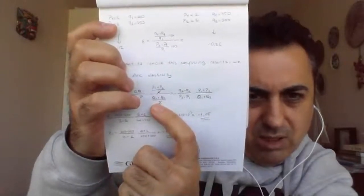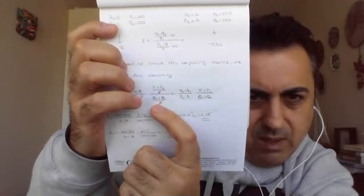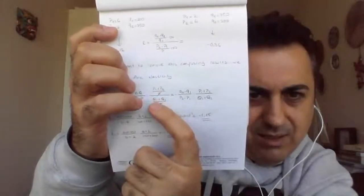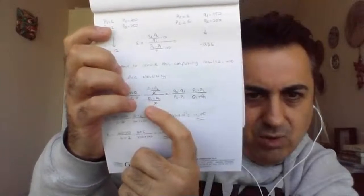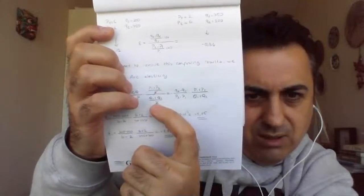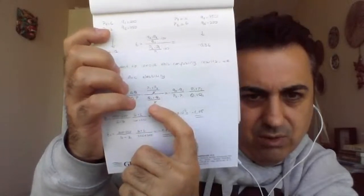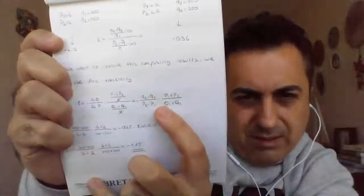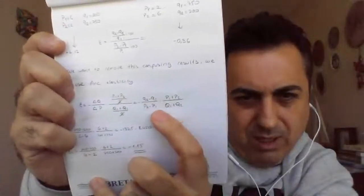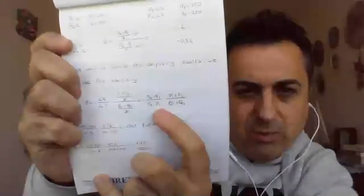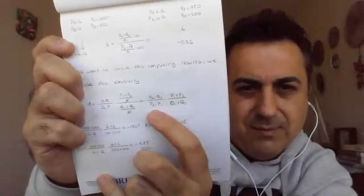We are using the quantity and price mean values. We can reduce the value by 2 and then pass to another formula. If you use this arc elasticity formula, you can remove the confusing problems seen at the top of the page.